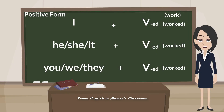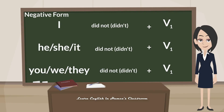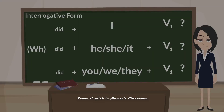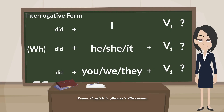With most verbs, the past tense is formed by adding -ed. This is the positive form of simple past. This is the negative form of simple past. This is the interrogative form of simple past.